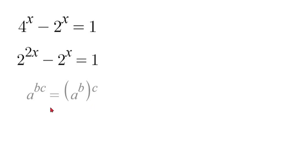So therefore we can pull out our 2 value and it would look like this. We would have 2 to the power of x to the power of 2 minus 2 to the power of x equal to 1.